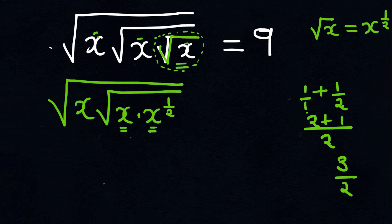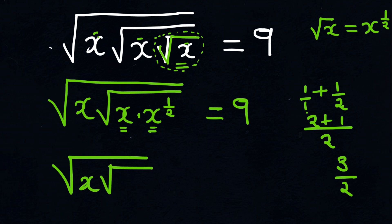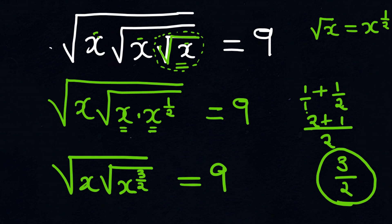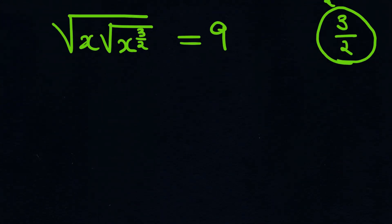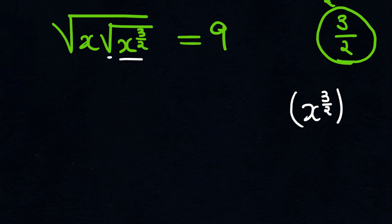Remembering that this expression is equal to 9, our next step is the square root of x multiplied by x to the power of 3 over 2, which equals 9. Now that we have eliminated the innermost square root, we move to the next inner square root. We change that square root into an exponent of half, so x to the power of 3 over 2 becomes x to the power of 3/2 multiplied by 1/2.